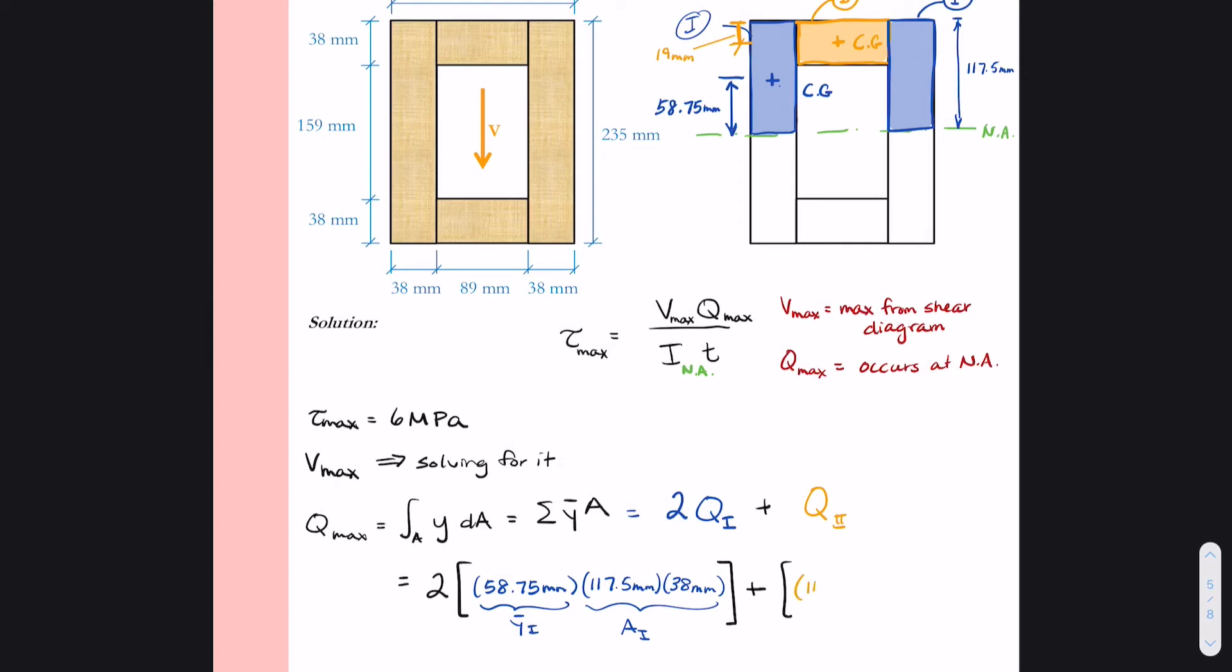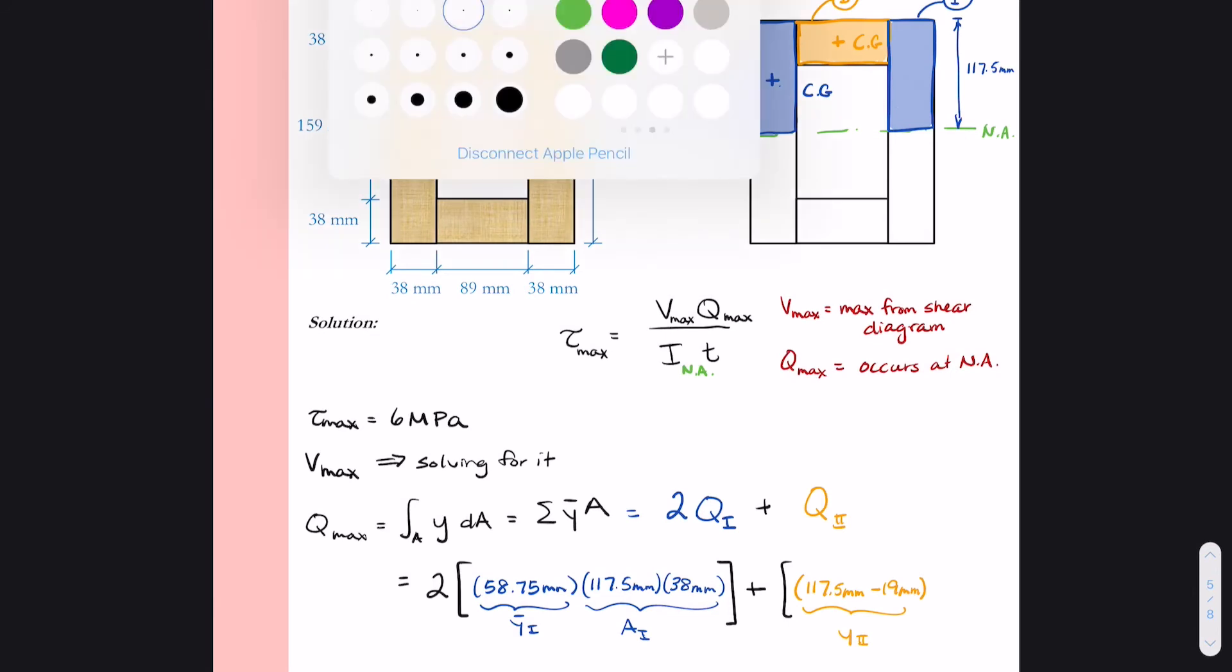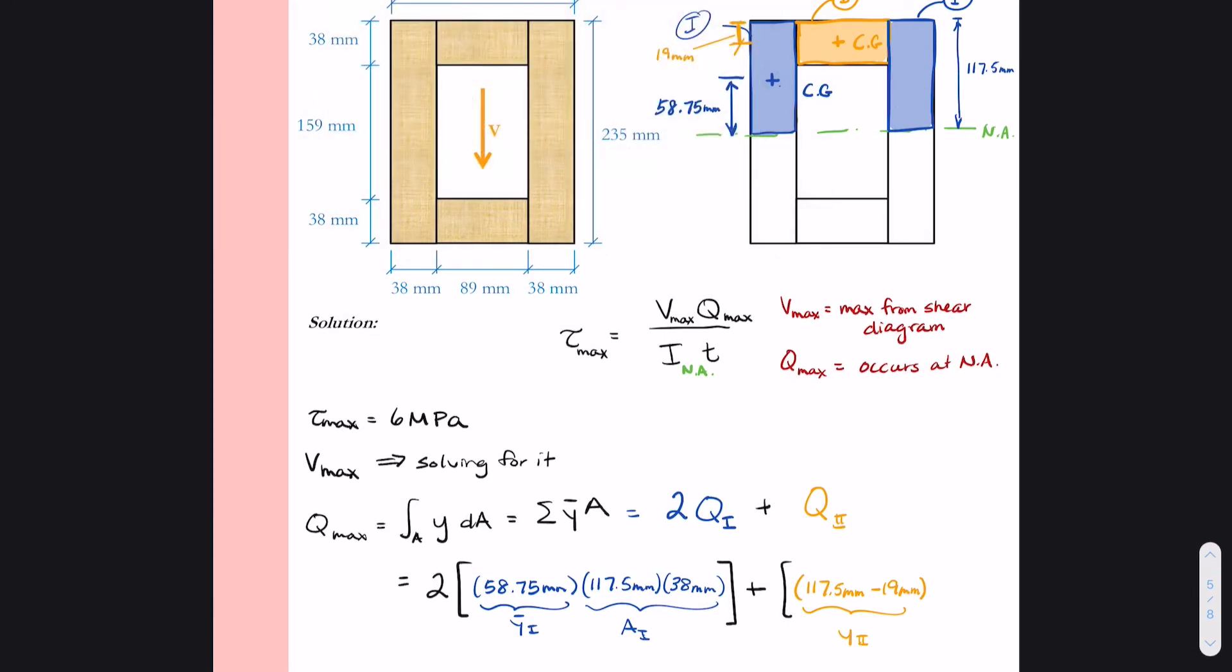So that's a distance of 19 millimeters. So 117.5 millimeters minus 19 millimeters is going to give me my distance Y bar for shape 2. The area of shape 2 is more straightforward. It is 89 millimeters wide by 38 millimeters tall.